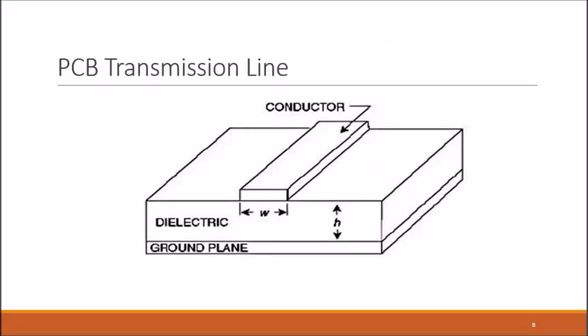Here we have the typical structure of a PCB transmission line. It is made up of a conductor, a dielectric, and a ground plane.